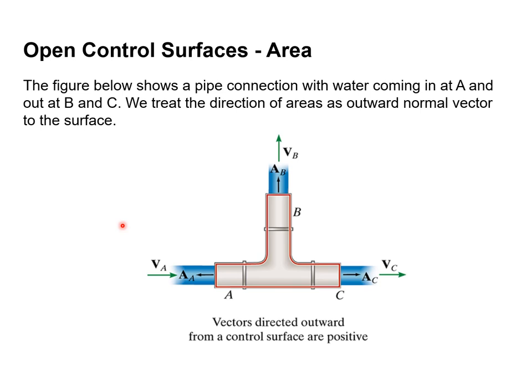So let's look at the most simplest case we can imagine here. So this shows a pipe connection with water coming in at point A. And so you can see the water flow coming in at A and going out at B and C. So here we treat the direction of areas as outward normal to the surface. And this is similar to what, if you took electrodynamics, so here at A, the area vector is outward normal. So what does normal mean? It means 90 degrees to the surface. Outward normal to the surface. So the area vector at A would point to the left. The area vector for B would point upward. And the area vector for C would point out to the right. And the velocity, as you can see, the water coming in at A and then splitting going out at B and C.